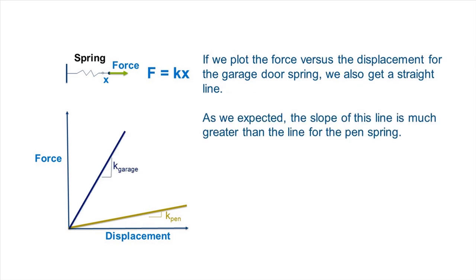If we plot the force versus the displacement for the garage door spring, we also get a straight line. As we expected, the slope of this line is much greater than the slope of the line for the pen spring.